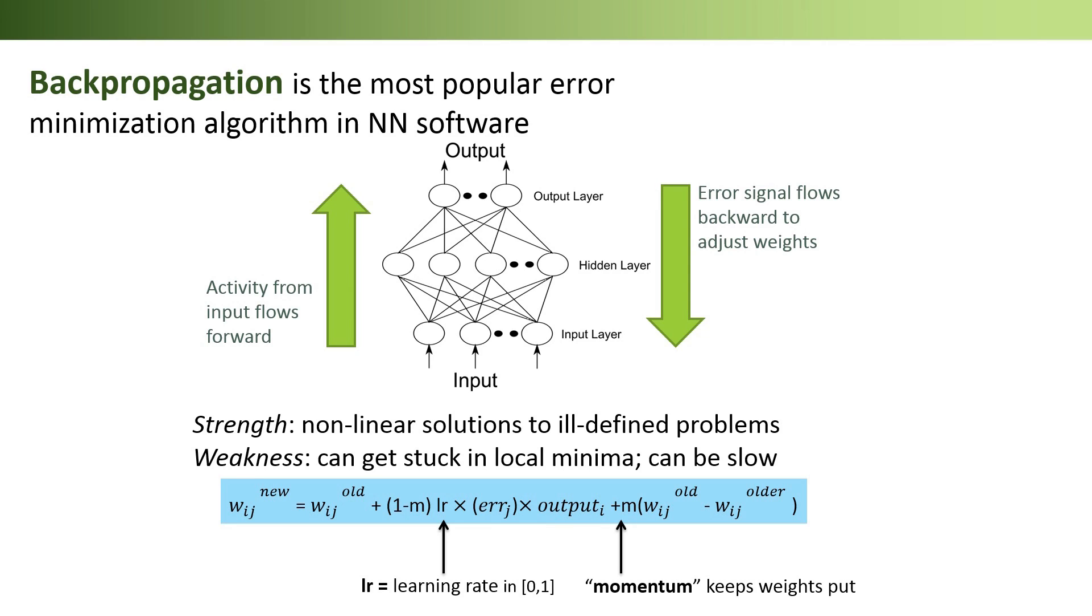The learning rate is similar to a smoothing constant, where higher values lead to faster learning. The momentum parameter can be set higher to have the magnitude or direction of the weights similar to previous iterations.